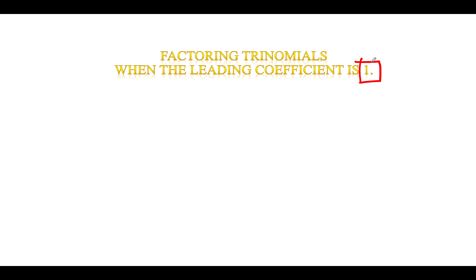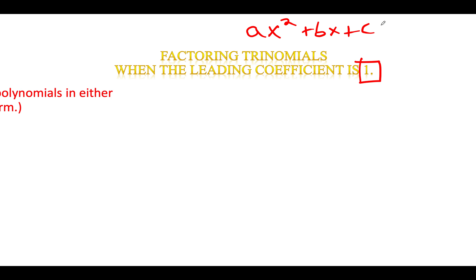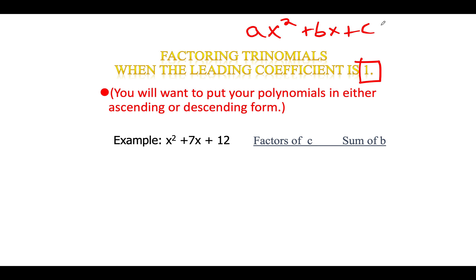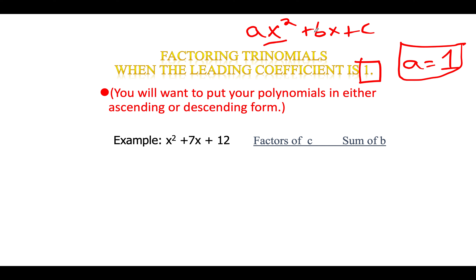Factoring trinomials when the leading coefficient is one. When we talk about trinomials we mean ax squared plus bx plus c. We need to put polynomials in descending order. When the leading coefficient is one, the value of a equals one. When a equals one, factoring trinomials isn't that difficult if you know basic arithmetic. We have a squared term, a linear term, and a constant term.